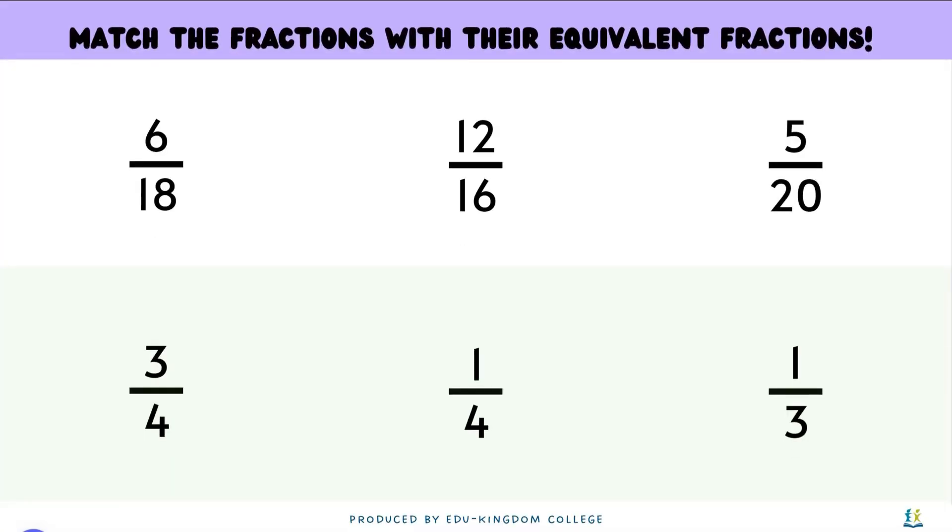Let's try matching these fractions with their equivalent fraction. The first fraction on the left here, 6 over 18. We know that both 6 and 18 can be divided by 6. So 6 divided by 6 is going to give 1 and 18 divided by 6 is going to give 3. Therefore, we know that 6 over 18 simplified would be a third. So we can match it with a third on the bottom.